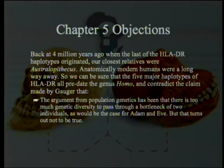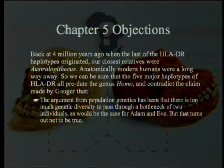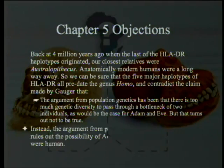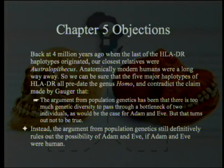The argument from population genetics has been that there is too much genetic diversity to pass through a bottleneck of two individuals as would be the case for Adam and Eve. But that turns out not to be true — instead, the argument from population genetics still definitively rules out the possibility of Adam and Eve, even if Adam and Eve were human.